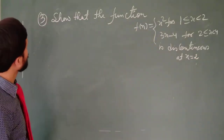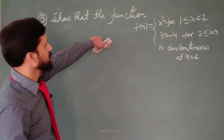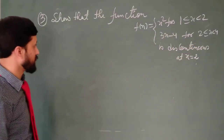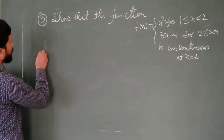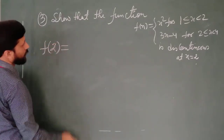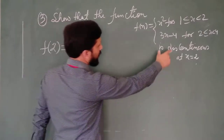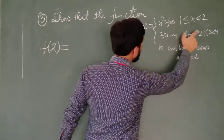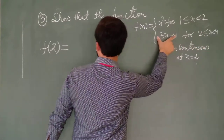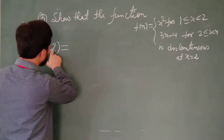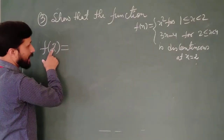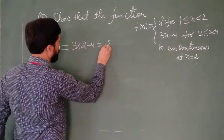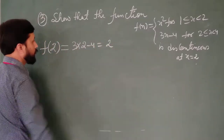You are asked to prove that the function is discontinuous at x equal to 2. First, find the functional value at the point 2. For that we use this expression when x is greater than or equal to 2. We put x equal to 2 in place of x to get the value of the function at 2, and we are getting 6 minus 4, that is 2.